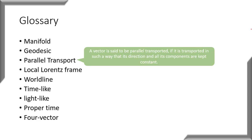We have also talked about parallel transport in one of our previous lecture videos. A vector is said to be parallel transported if it is transported in such a way that its direction and all its components are kept constant.